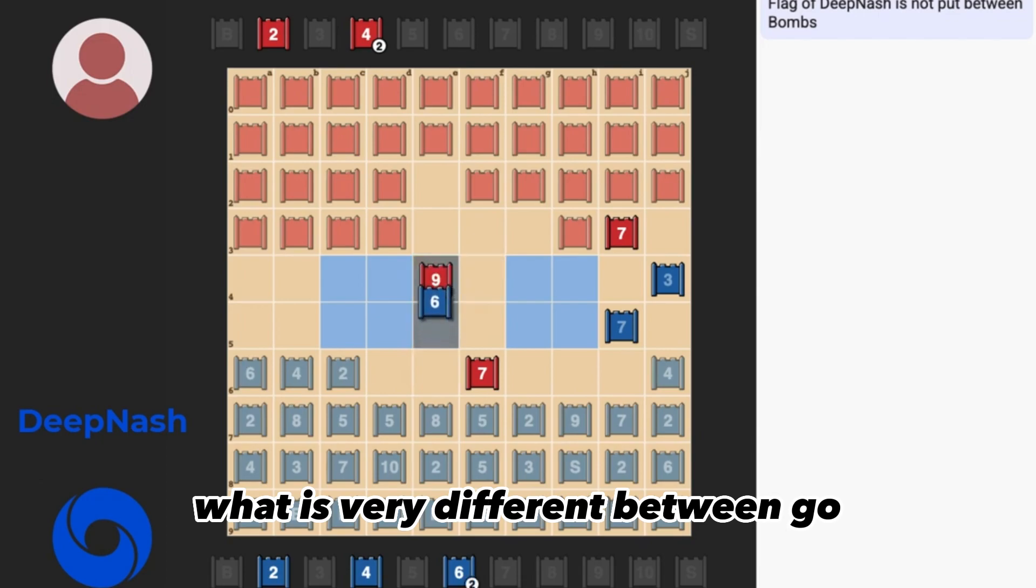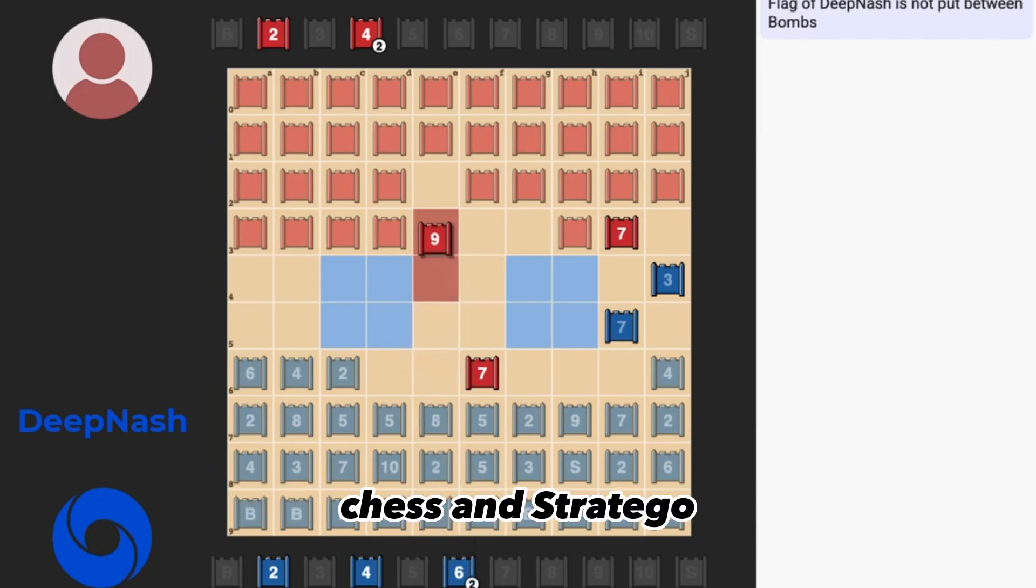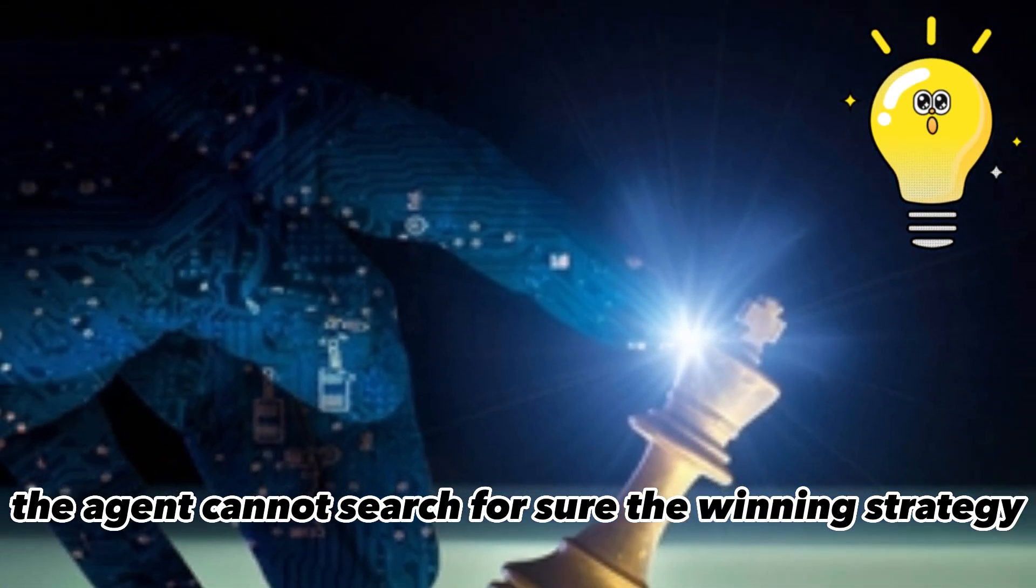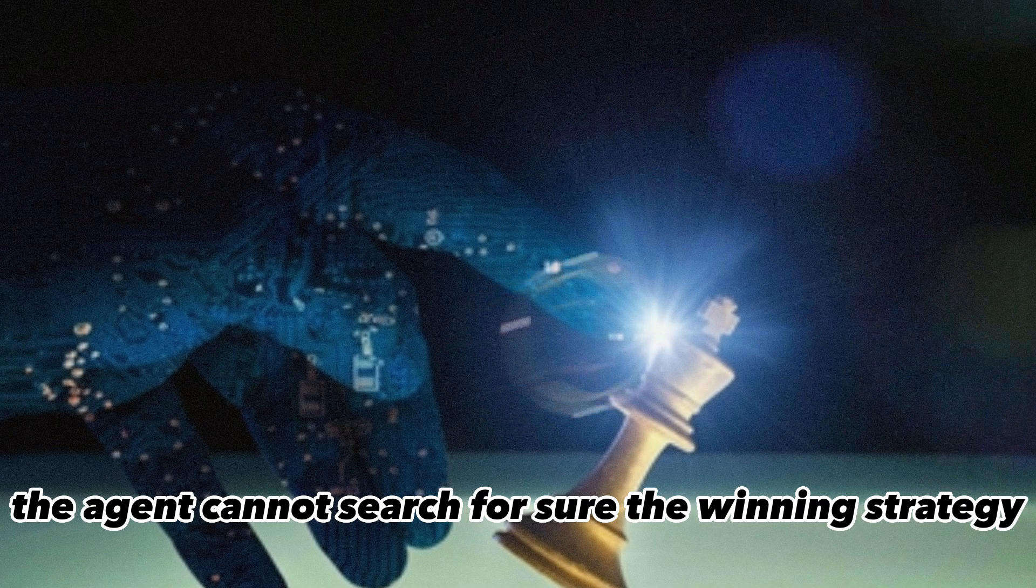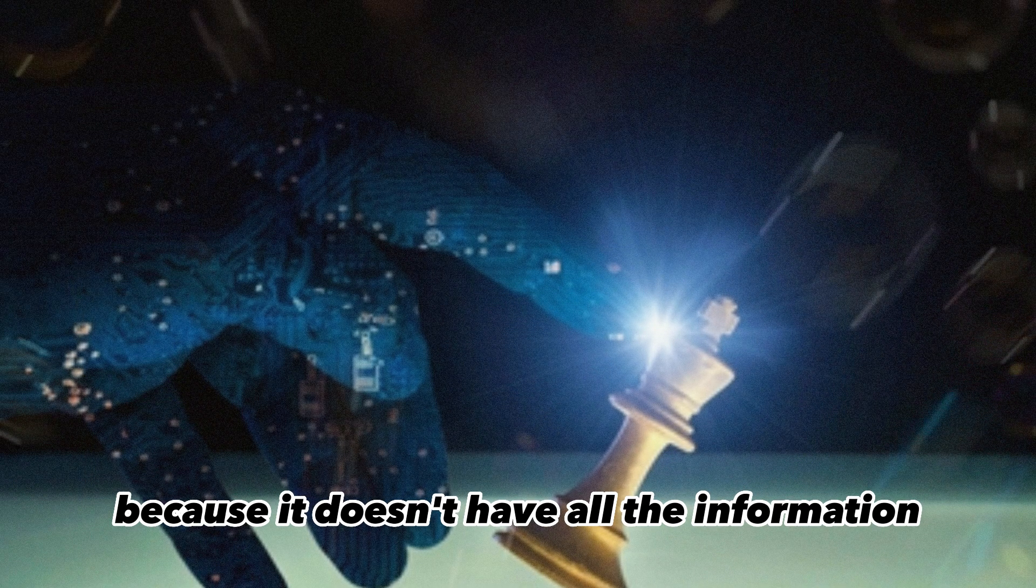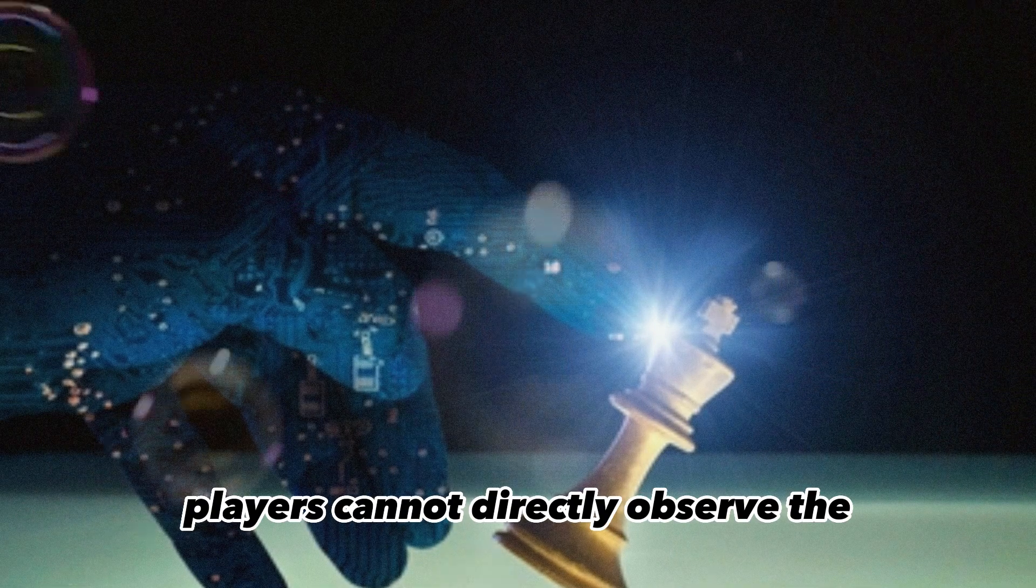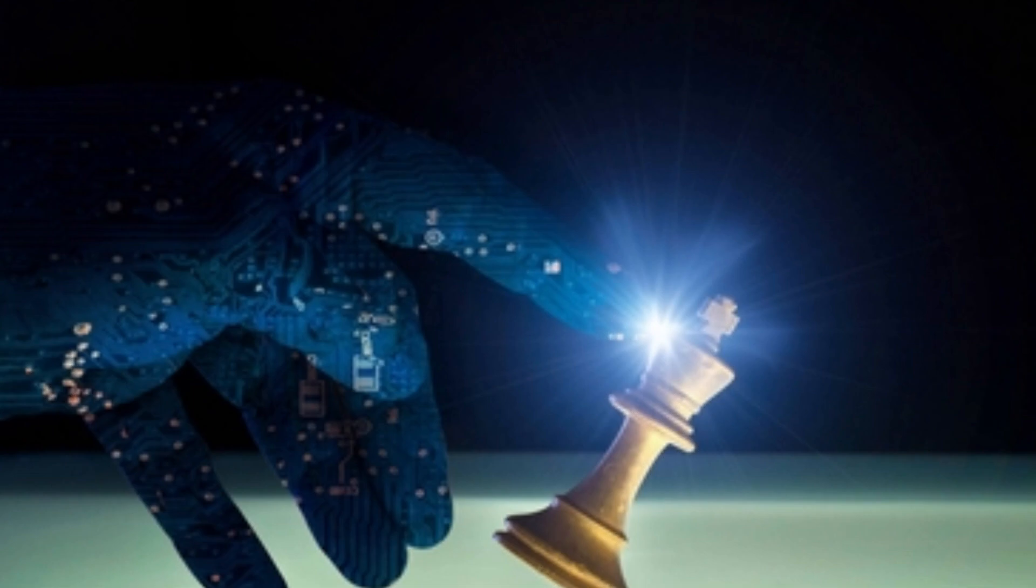What is very different between Go, Chess and Stratego is that Stratego is a game of imperfect information. The agent cannot search for sure the winning strategy because it doesn't have all the information necessary to compute that. Players cannot directly observe the identities of their opponent's pieces.